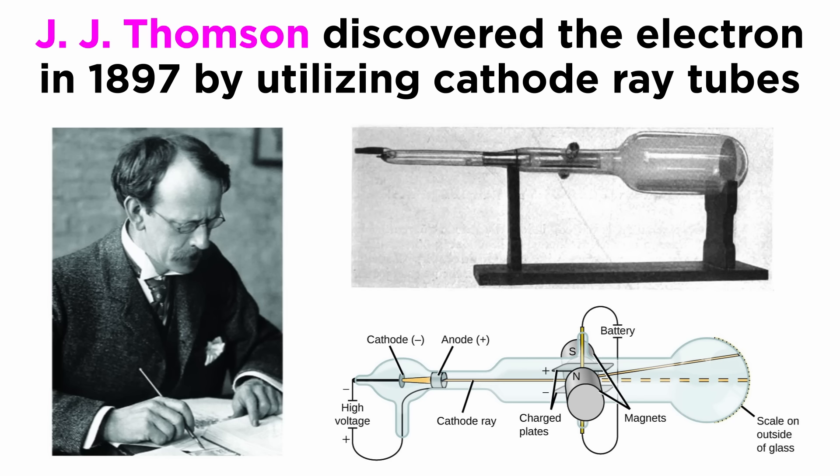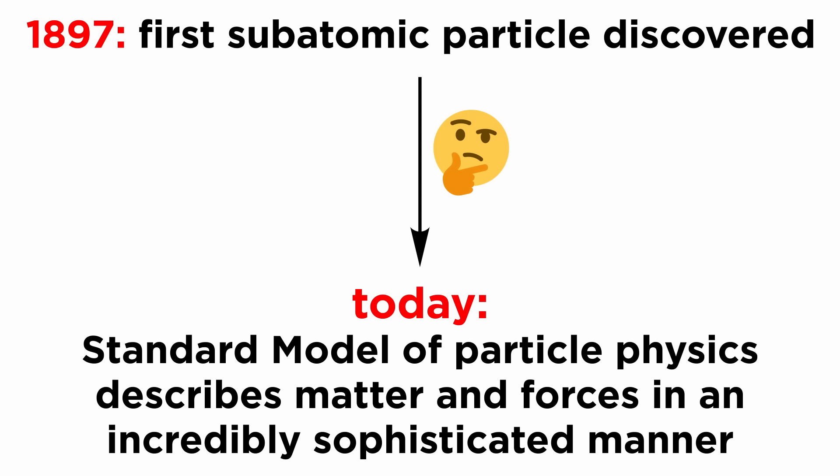However, humanity didn't even know about the existence of the electron until 1897, when J.J. Thompson found it using cathode ray tubes like the ones found in old TVs. In barely more than 100 years, how did we go from a model that was developed from the first known subatomic particle to a complex and intricate theory describing all known types of matter and three fundamental forces?